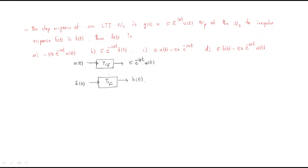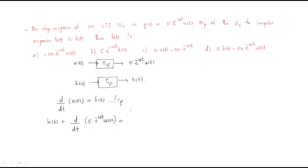To find h(t), we differentiate the step response output y(t) = 5·e^(-10t)·u(t). Applying the product rule with 5 as a constant: h(t) = 5 · [e^(-10t) · d/dt(u(t)) + u(t) · d/dt(e^(-10t))]. Differentiating u(t) gives δ(t), and differentiating e^(-10t) gives -10·e^(-10t). So we get h(t) = 5·[e^(-10t)·δ(t) + u(t)·(-10·e^(-10t))].